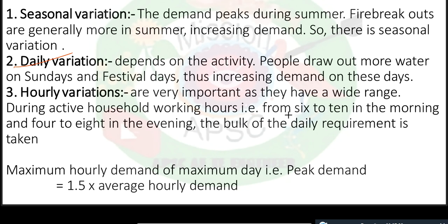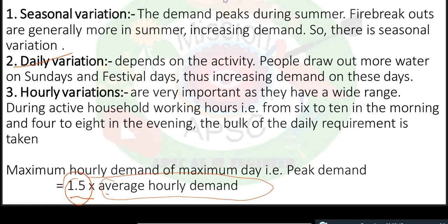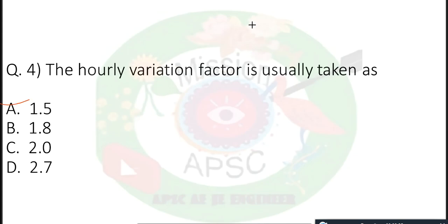Hourly variation is very important as it has a wide range. For example, at 8 to 9 a.m. water consumption is high; during walking hours water consumption will be less. Before the working hours, water consumption will be more. So there are hourly variations of water demand. Maximum hourly demand of the maximum day is defined as peak demand, and that will be 1.5 times the average hourly demand — this factor you have to remember for numericals. So the answer is 1.5: the hourly variation factor is usually taken as 1.5.